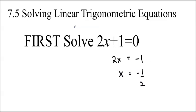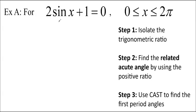And that's how we solve linear equations. If we have a linear trig equation, like 2 sine x plus 1 equals 0, we're going to do it in almost exactly the same way, but we're going to add some steps to it. So the first thing we're going to do is isolate sine x, just like we would isolate x usually. So we get sine x equals negative 1 half. And then we'll solve this by using the related acute angle and the positive ratio and then using CAST.